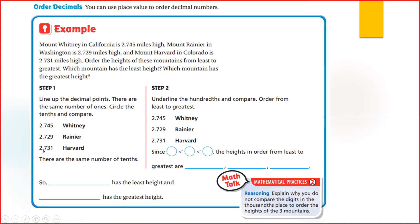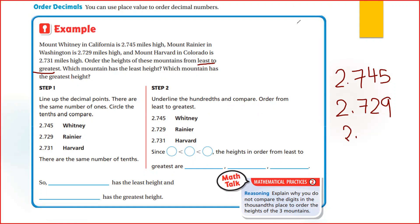Now, the height is less than 2.714 — the greatest height. What do you have to do? Write them under each other: 2.745, 2.729, 2.731. First, you write them under each other. Then: 2 equals 2 equals 2, 7 and 7 and 7. Now here, what do we have? 4, 2, and 3. So which is the least? 2. So 2.729 will be the first one.